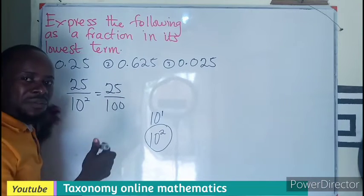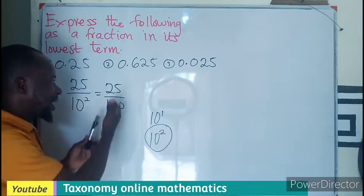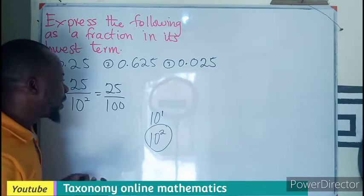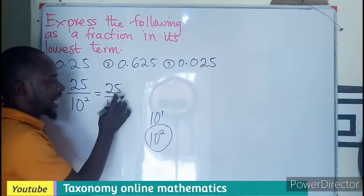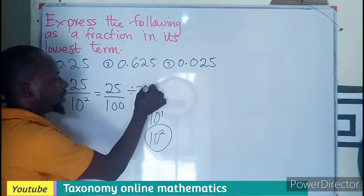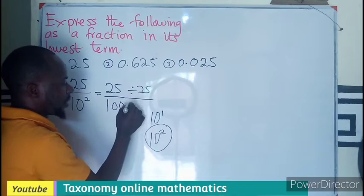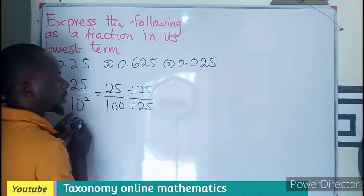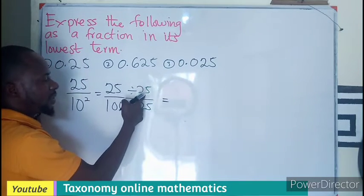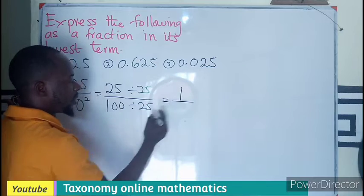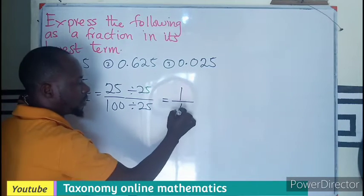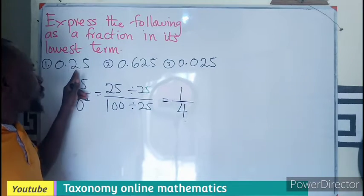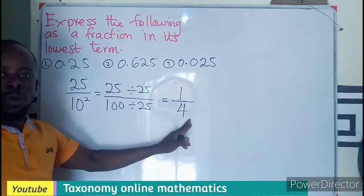We find out if there is a common factor — a number that is a common factor for both the numerator and the denominator. We can see that if we divide the top by 25 and the bottom by 25: 25 divided by 25 is 1, and 100 divided by 25 is 4. So in its lowest term, 0.25 is just 1 over 4.